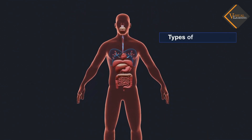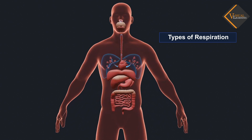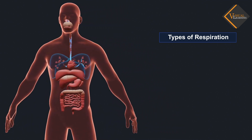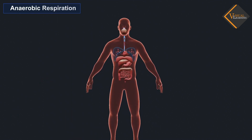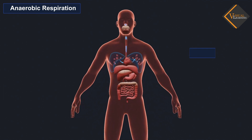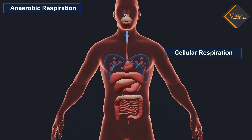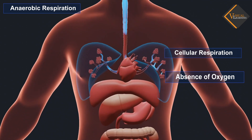There are two types of respiration: anaerobic respiration and aerobic respiration. Anaerobic respiration is a type of cellular respiration that takes place in the absence of oxygen to produce energy.